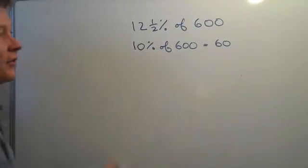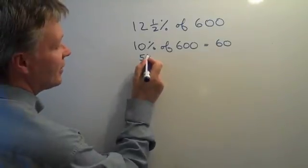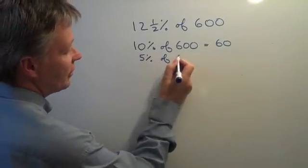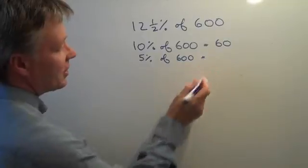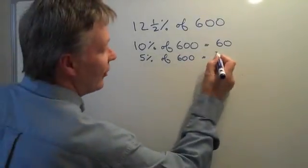If 10% of 600 is 60, then 5% of 600 is going to be half of that, which is 30.